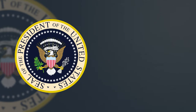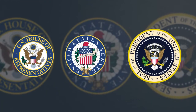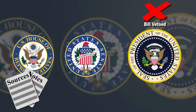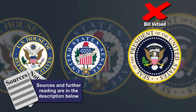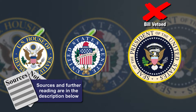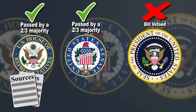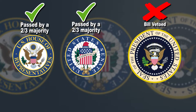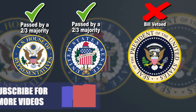If the president chooses not to sign it, he'll send it back to Congress with objections. This is called a direct veto. By this point, Congress can make the bill into a law without the president's approval if both the House and the Senate vote on the bill again, with a two-thirds majority vote in favor of the bill.